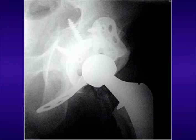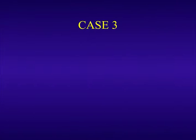There's the roof ring construct. You can get a nice flange up on the iliac wing, a flange down on the ischial tuberosity, some good screws in there, and a cemented all-poly cup.